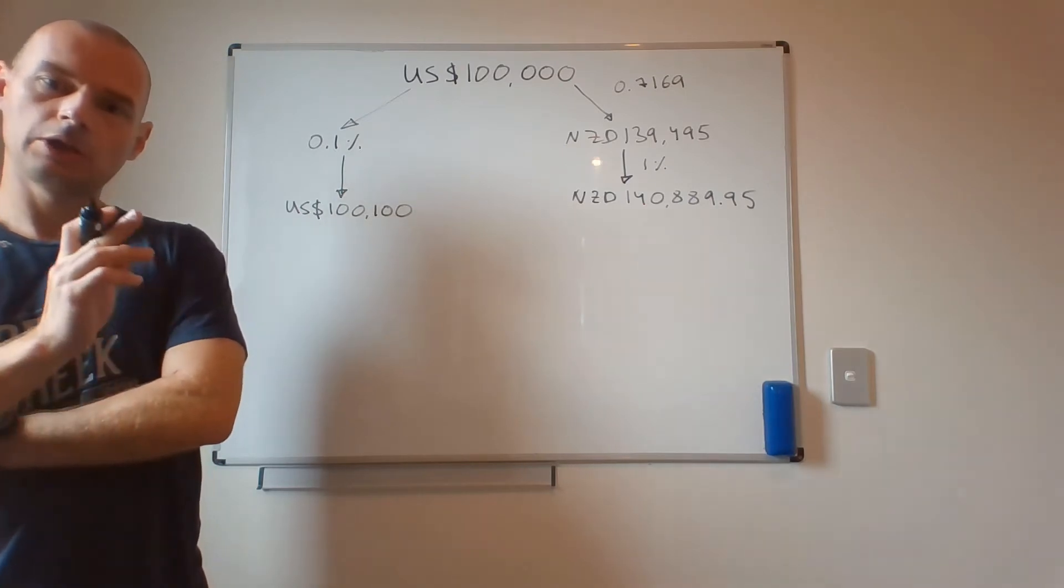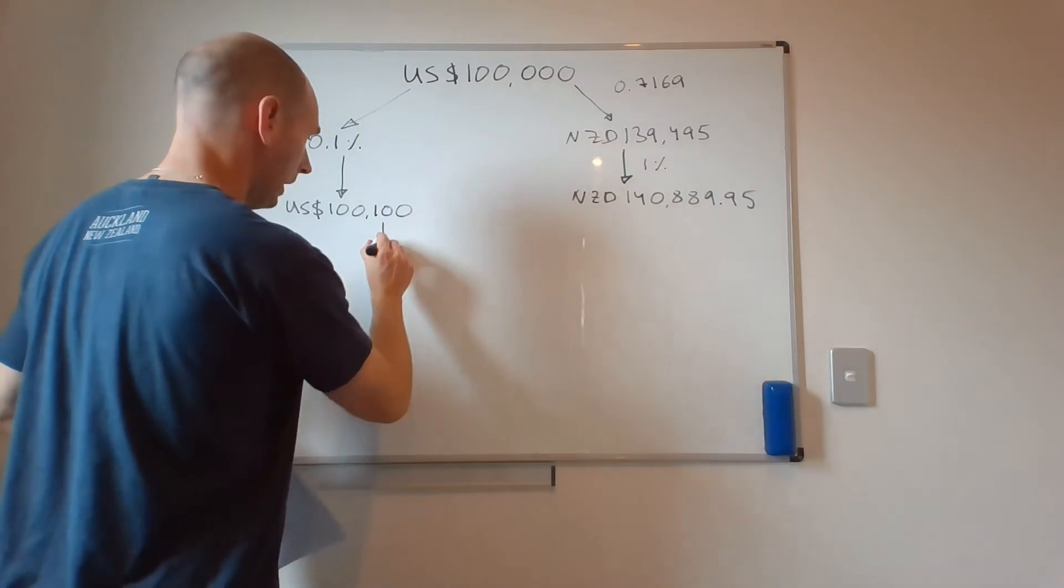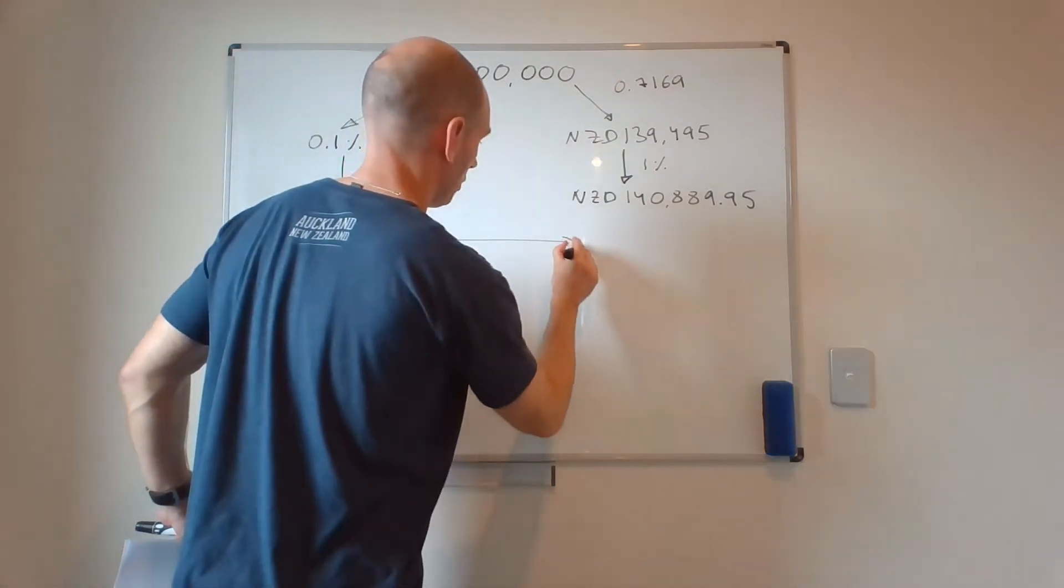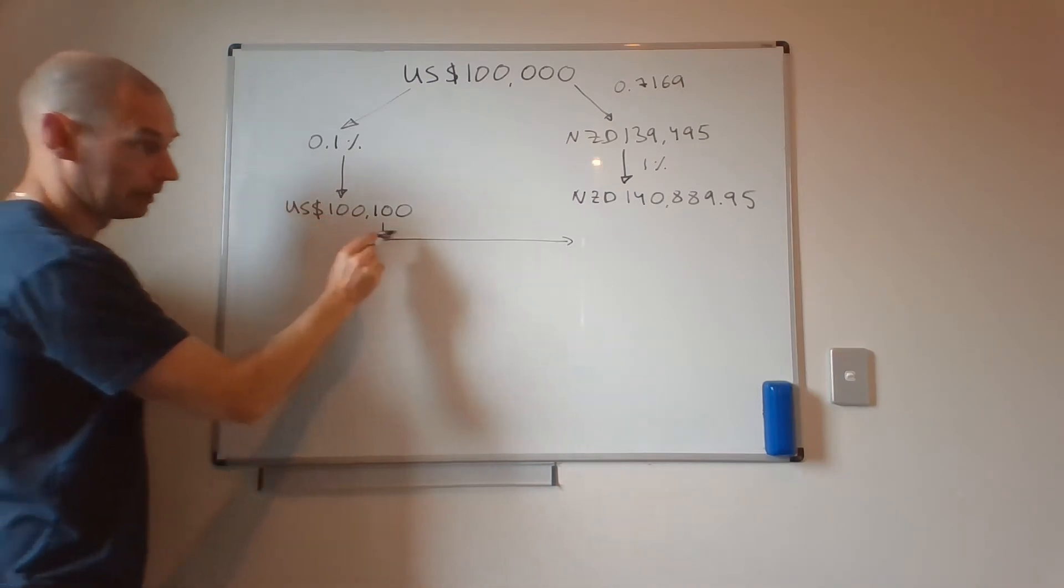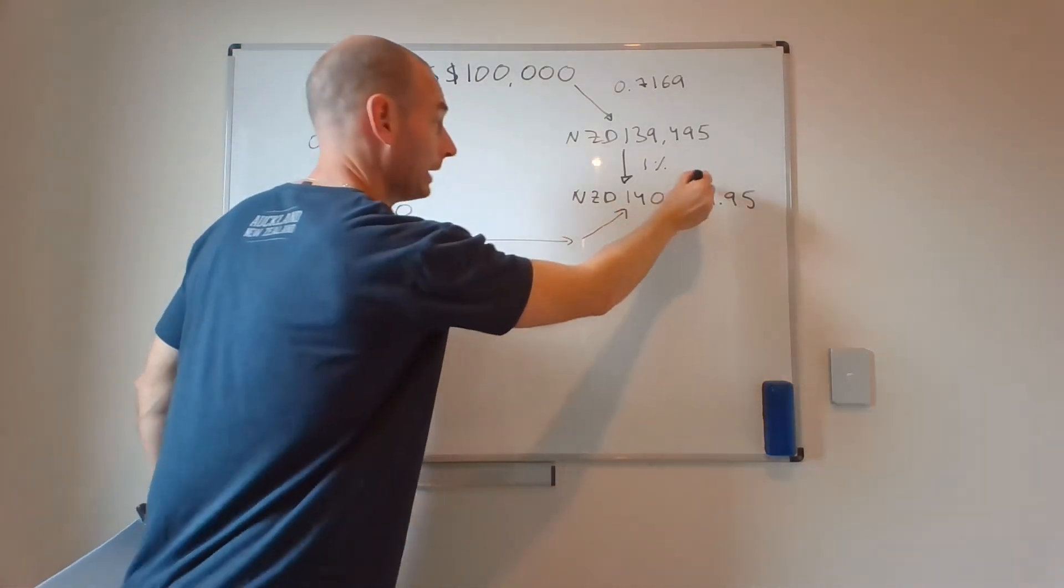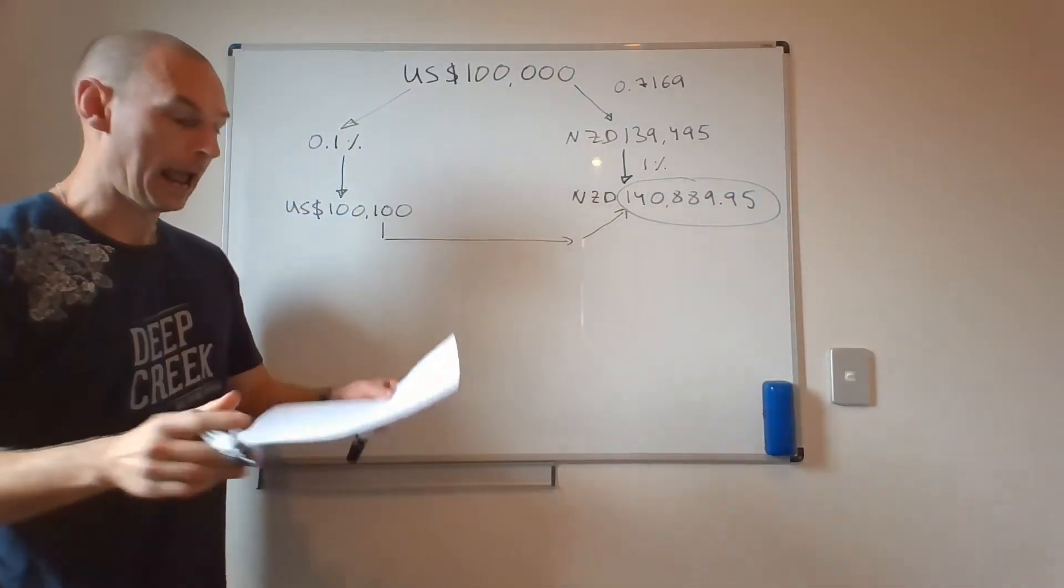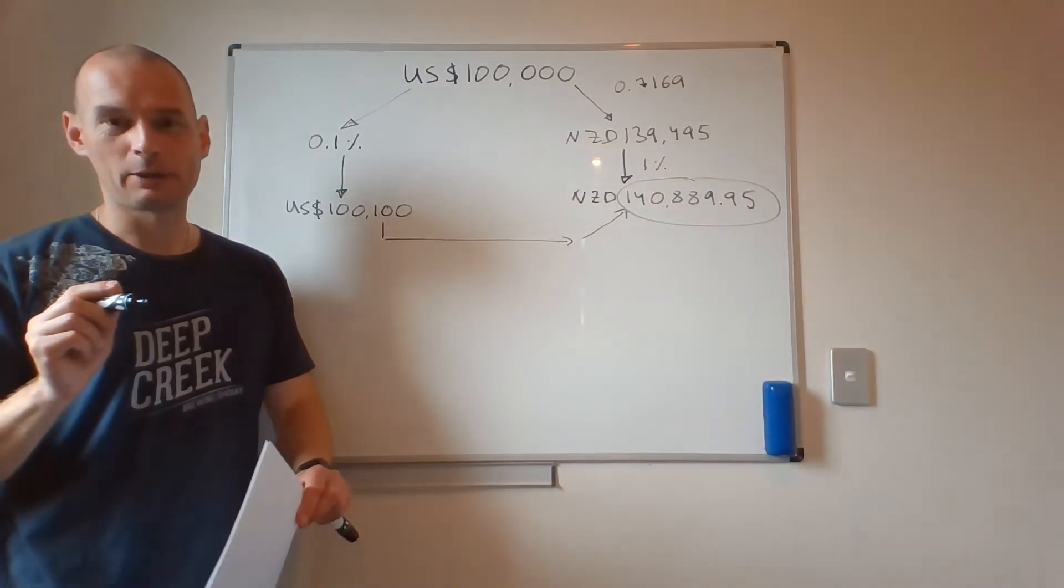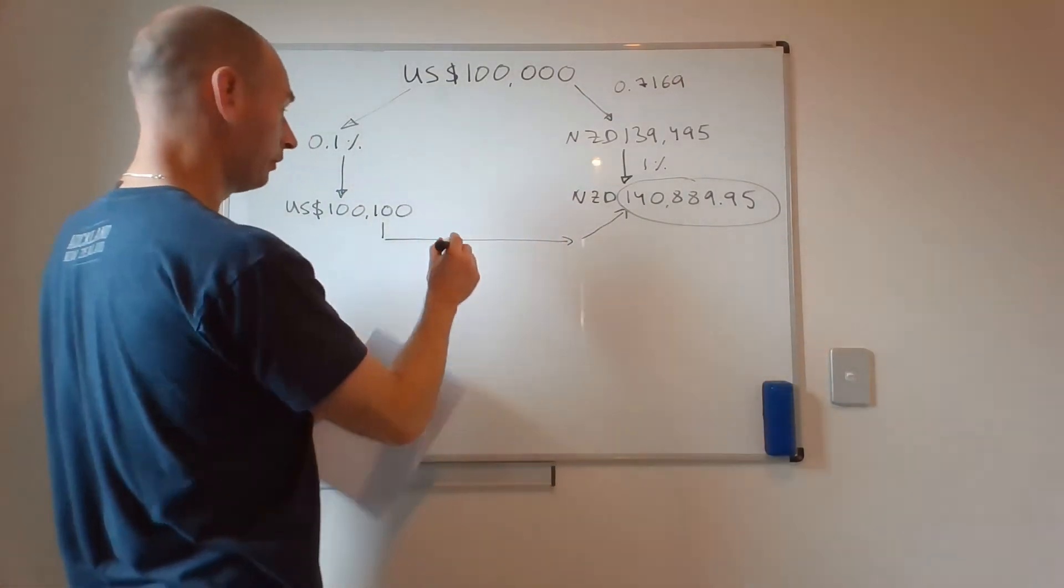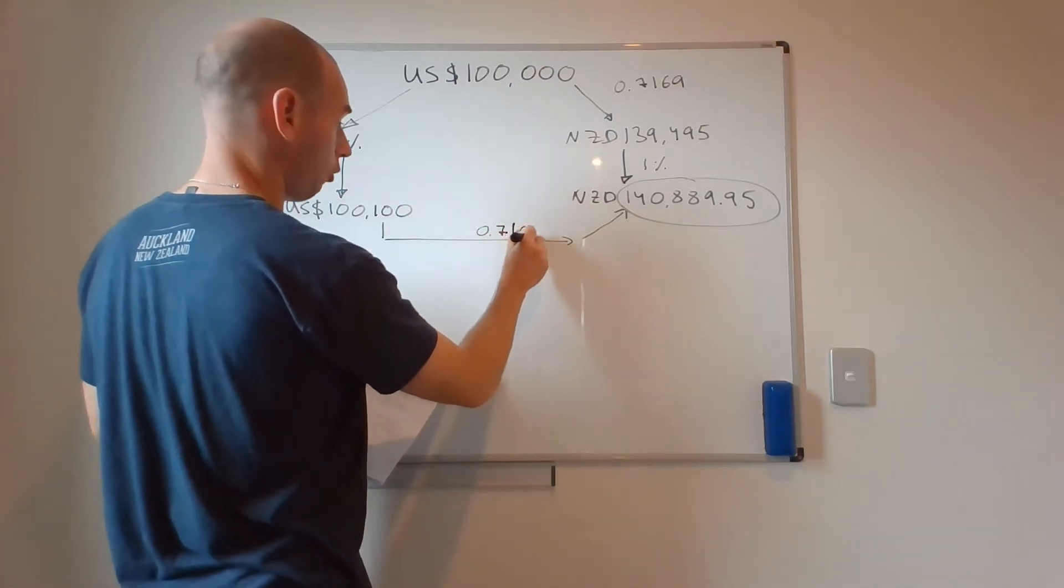Under the interest rate parity, when in a year you transfer your American balance into New Zealand, you have to end up with exactly the same cash flow.